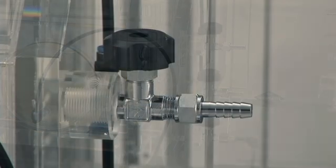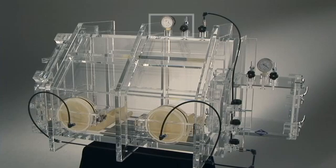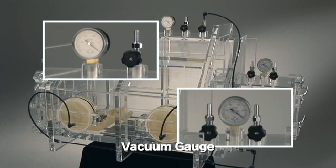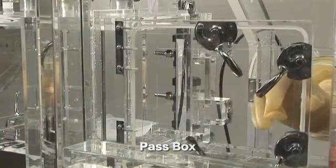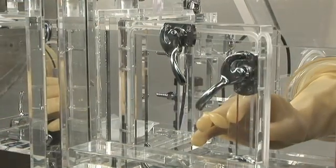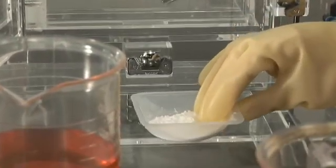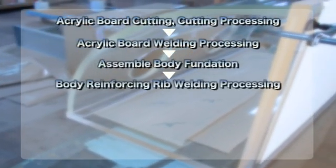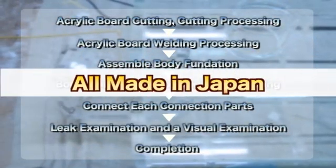Adopt the needle valve for the fine adjustment of gas replacement. There is a vacuum gauge in the main box and the pass box. You can confirm the pressure in the box. The pass box makes it possible to take out the sample while keeping the gas replacement situation. All processes are made in Japan and have good quality control.